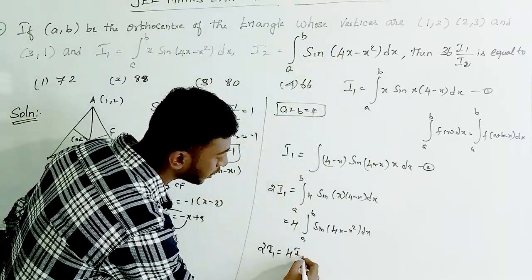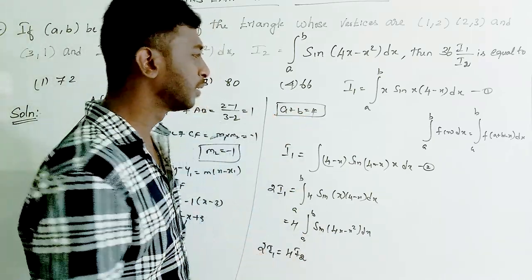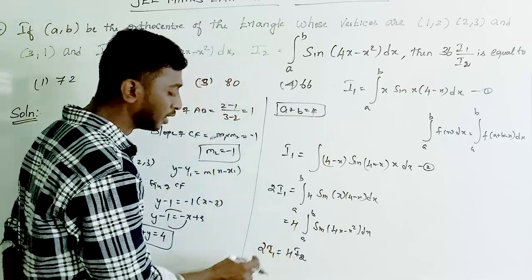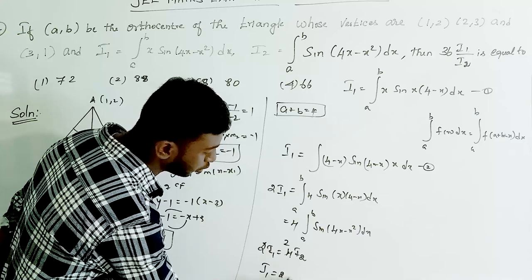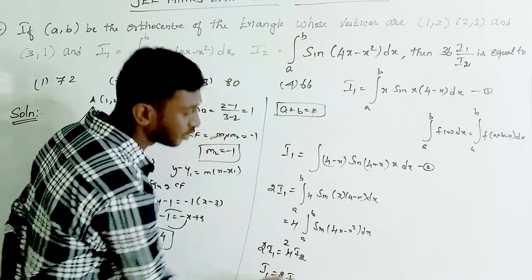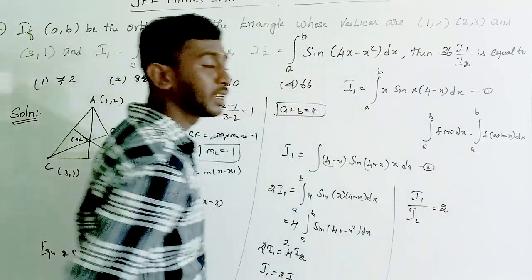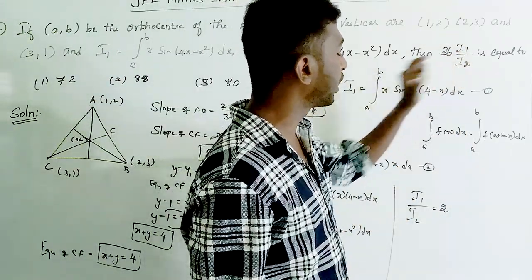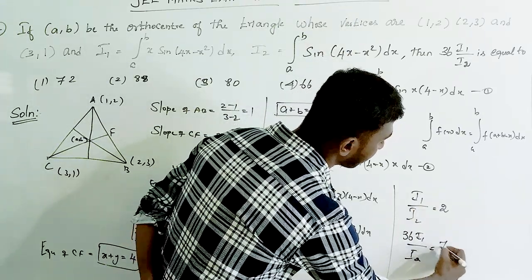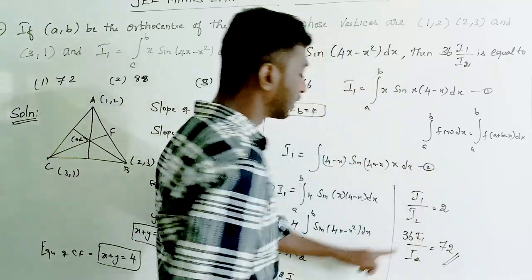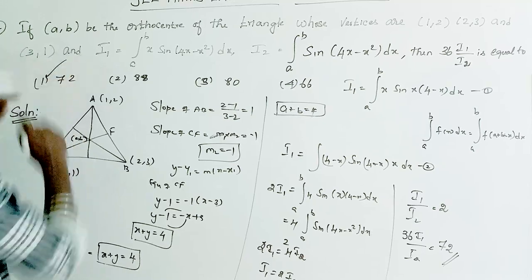After applying the property, 2·I1 = 4·I2, so I1 = 2·I2, which gives I1/I2 = 2. Therefore, 36·I1/I2 = 36 × 2 = 72. Option A is the correct answer.